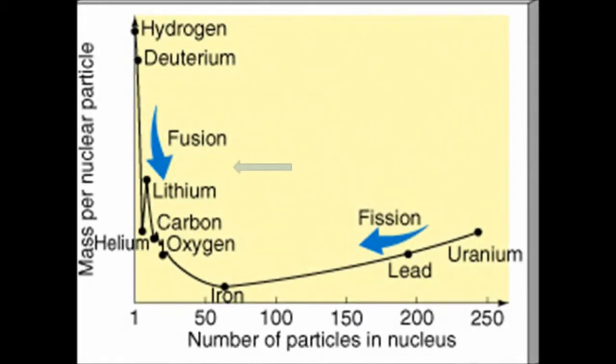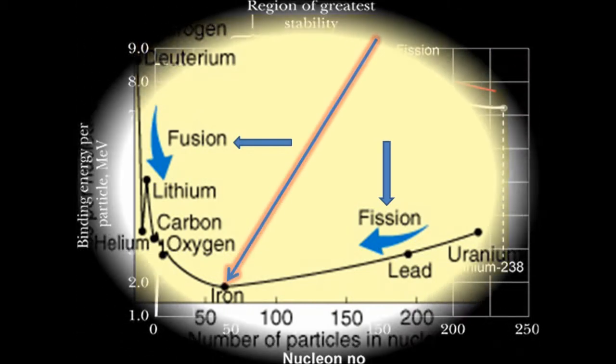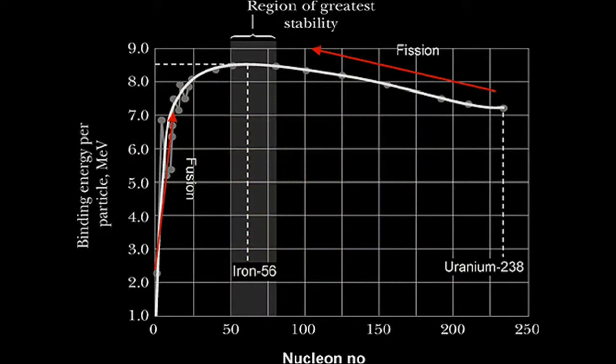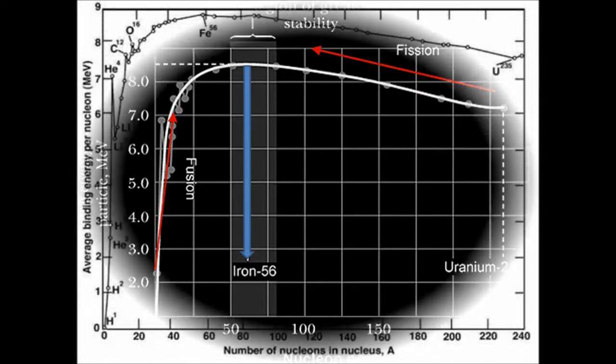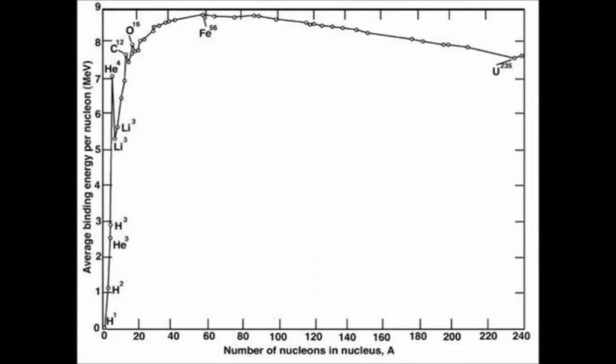When light nuclei fuse, the mass per particle decreases and energy is released. Similarly when heavy nuclei split apart, the total mass again decreases and energy is again released. The nucleus with the smallest mass per nuclear particle is iron. It can neither be fused nor split to release energy.